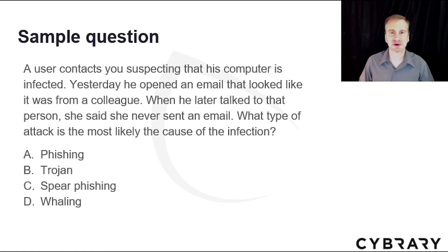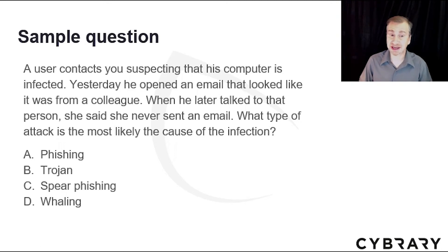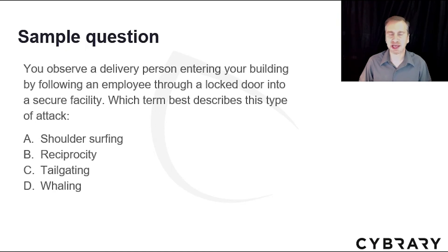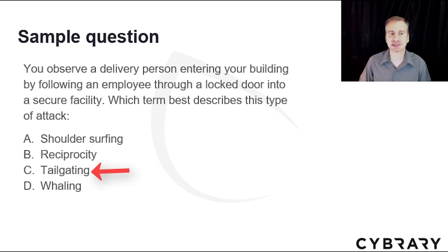Let's practice on a sample test question. A user contacts you suspecting that his computer is infected. Yesterday he opened an email that looked like it was from a colleague, but when he later talked to that person, she said she never sent that email. What type of attack is the most likely cause? The answer is C — spear phishing, because it's a directed attack, as opposed to phishing which is a general spam-type attack. Question 2: You observe a delivery person entering your building by following an employee through a locked door into a secure facility. Which term best describes this type of attack? The answer is C — tailgating, following someone into a secured facility.